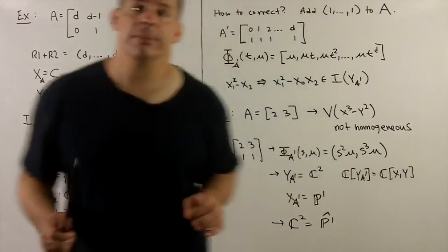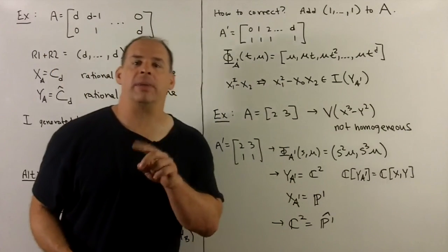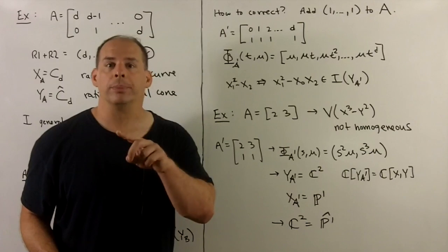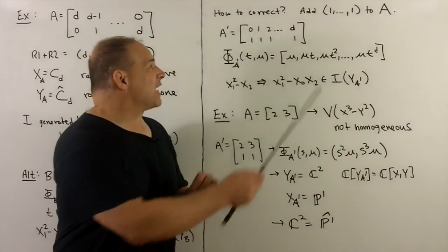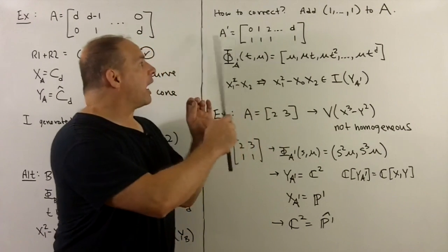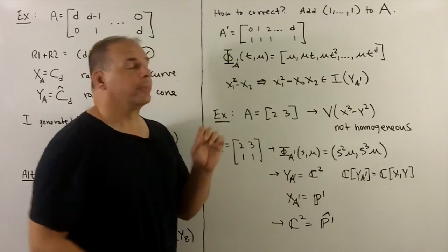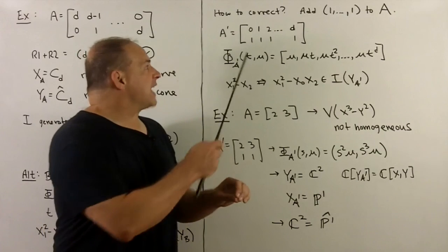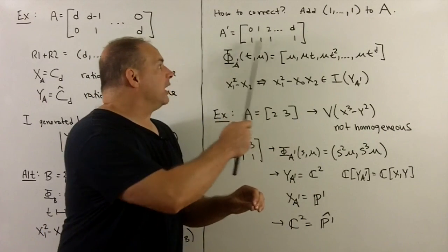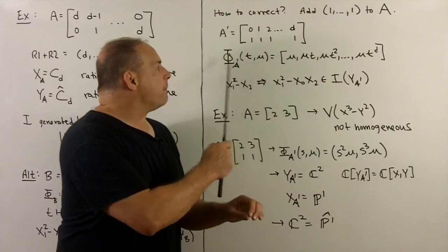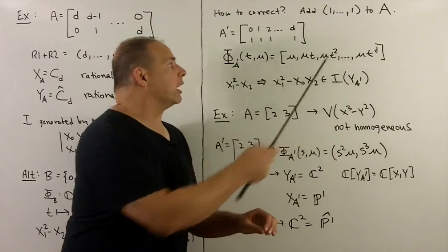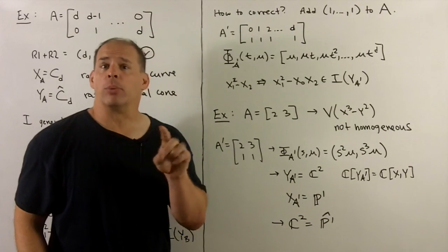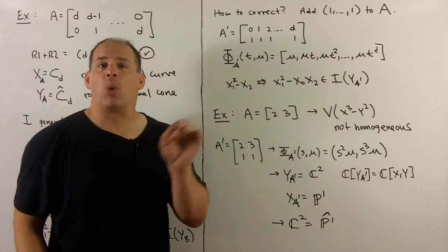Now, to fix this, that means I want to keep x sub a as it is, but I want y sub a to become the cone. What we could do is add a row of ones to our A matrix. So I now consider A prime. What does this do to the characters? Well, just adding in a 1 means we're throwing in a new variable, and in our map, we're just going to let it have exponent 1 in each component.